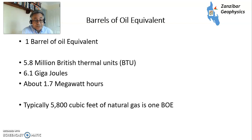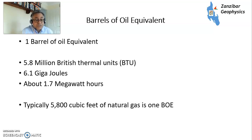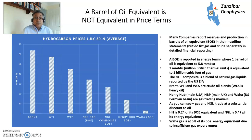One barrel of oil equivalent equals 5.8 million British thermal units, 6.1 gigajoules, or about 1.7 megawatt hours. Typically, 5,800 cubic feet of gas equals one BOE — so a conversion factor of 5.8 thousand. Therefore, one million barrels of oil is equivalent to 5.8 BCF of gas. Some people round up to six, but 5.8 is the number you want to use.